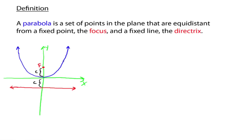If you take any point on your graph, say this point right here, we'll call it point p and give it coordinates (x, y). The distance from this point on our parabola to the focus, and the distance from this point on our parabola down to the directrix, are to be equal. It doesn't look that way in my freehand graph because I don't have the focus and directrix in exactly the right place.